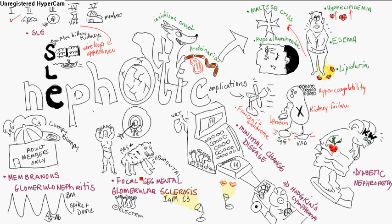Minimal change disease is mainly for young children. It's of unknown etiology but usually follows an upper respiratory infection. It's also associated with Hodgkin's disease — Hodgkin's lymphoma. It can occur in older children or adults, but you're mostly going to see it in young children. Under light microscopy, you see normal-appearing glomeruli but lipid accumulation in the renal tubular cells. Under electron microscopy, you see fusion of the epithelial foot processes. It is caused by T-cell-derived cytokines.